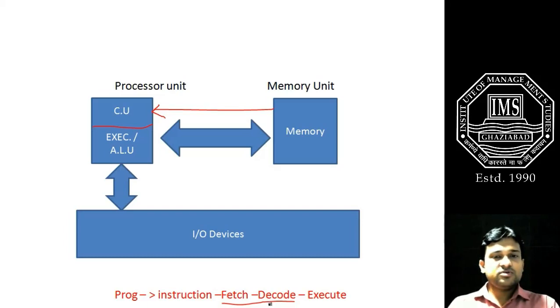After fetching and decoding has been done from the CPU end, it goes to the ALU part, the execution unit, and the execution unit executes that instruction or program and then transfers to the input-output devices. So at last we receive our processed data after the instruction has been executed by the ALU from these output devices.